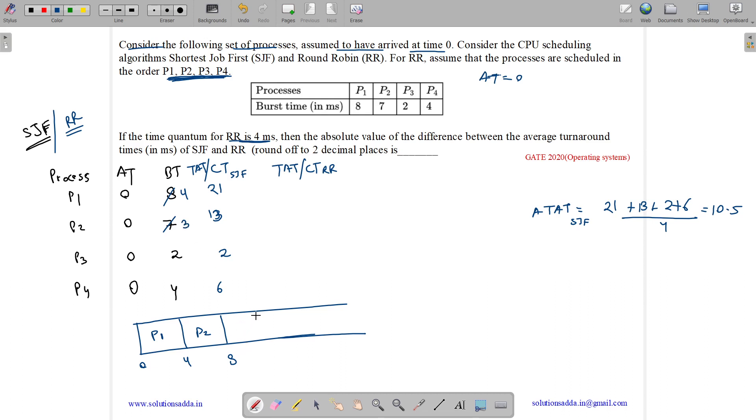Now P3 gets scheduled. It has 4 milliseconds but it needs only 2. So it gets scheduled till 10 and it remains zero. Then we have P4. So P4 gets scheduled from 10 to 14. Remaining is zero.